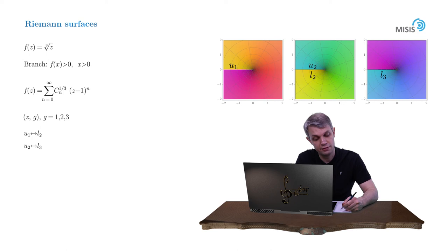And finally, the upper bank of the cut of the third Riemann sheet U3 should be connected to the lower bank of the cut of the first Riemann sheet L1. This way we obtain the full cycle.